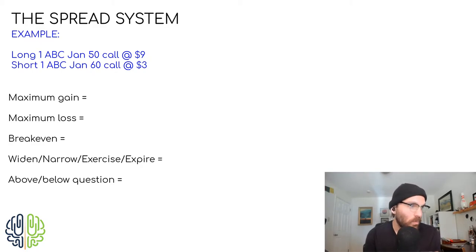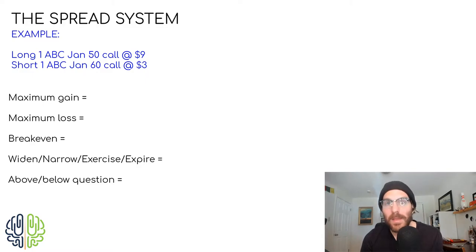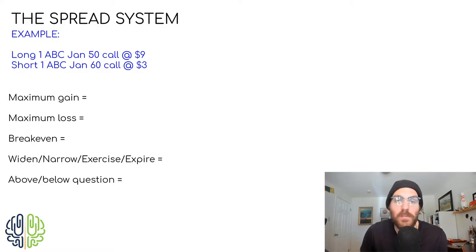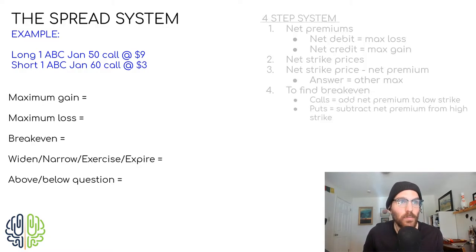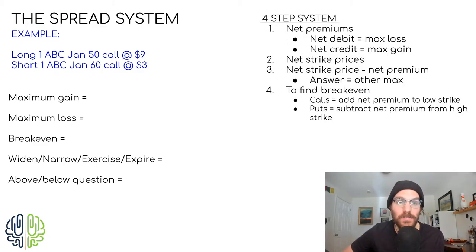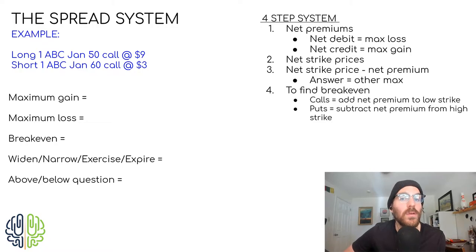We'll get to the wide/narrow, exercise/expire, and the above/below question. But first we're going to cover maximum gain, maximum loss, break-even. If you've read through the Achievable materials, you've already seen what I'm about to put up on the screen, which is a four-step system to getting to the right answer. Something to keep in mind: this four-step system only works with spreads. Don't try to use this on straddles, hedging, income, or any other strategy.